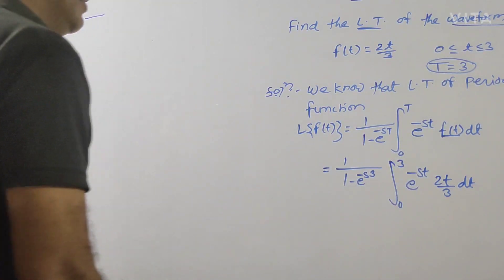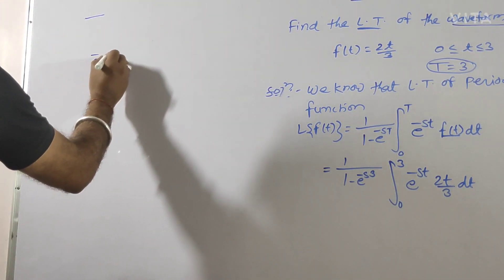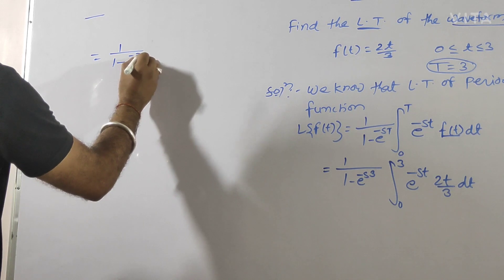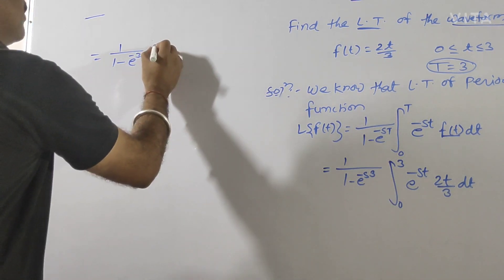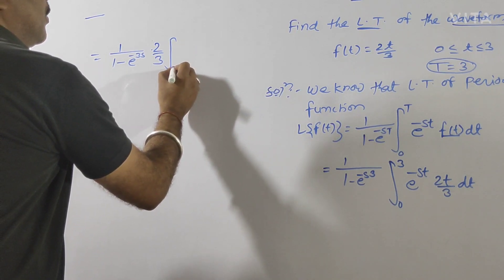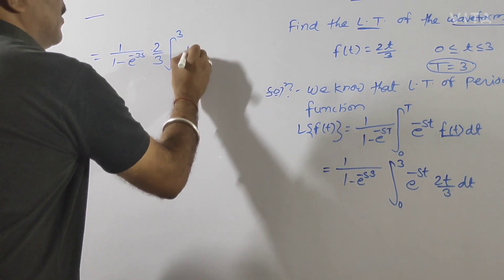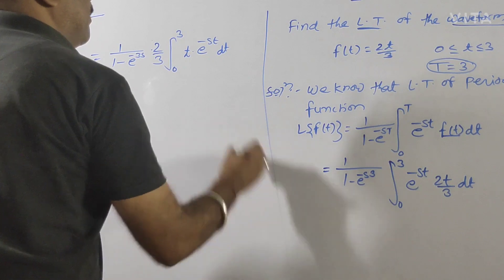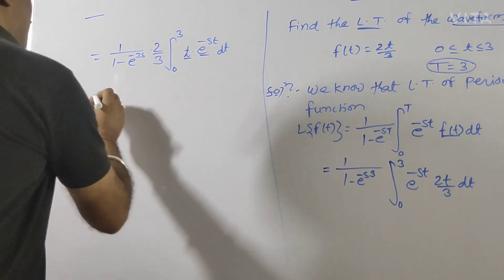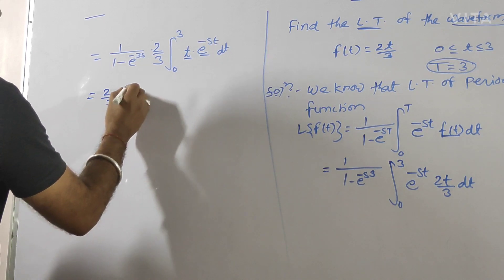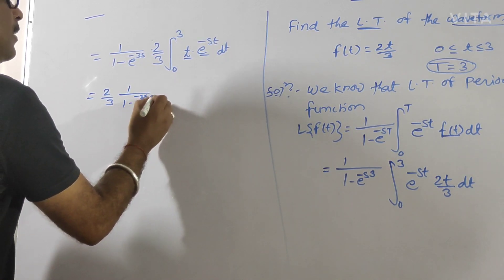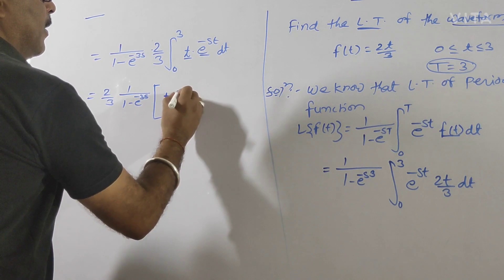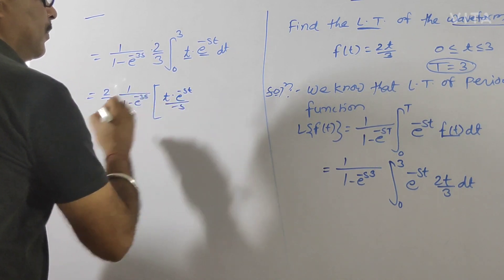बस इसको integrate करके इसकी value निकालनी है. तो यह हो जाएगा 1/(1 - e^(-3s)), यहाँ से 2/3 को constant के रूप में बाहर निकाल लेते हैं, और यह integral 0 to 3 हो जाएगा — t × e^(-st) dt. यह product of two functions के form में आ जाएगा. 2/3 × 1/(1 - e^(-3s)), first integration of second: e^(-st)/(−s).